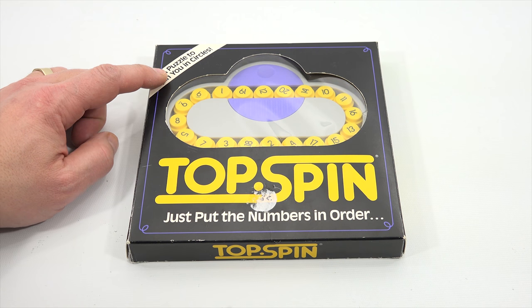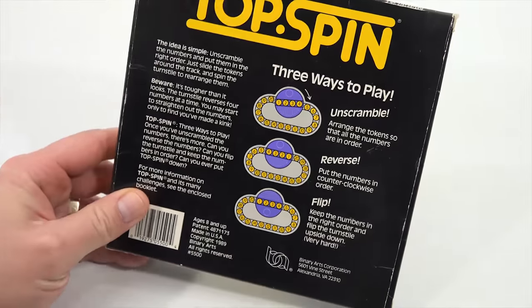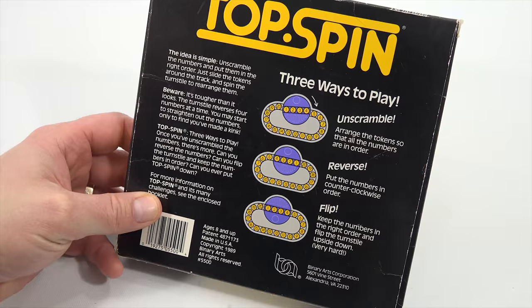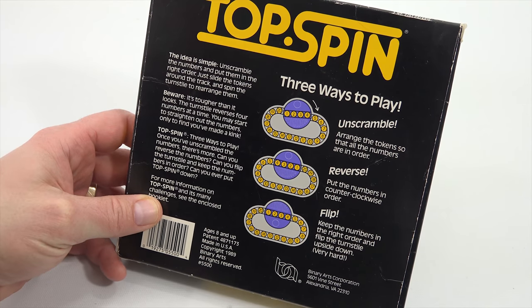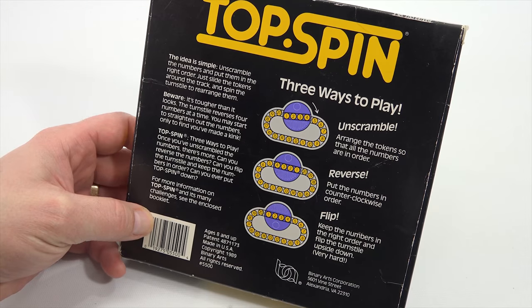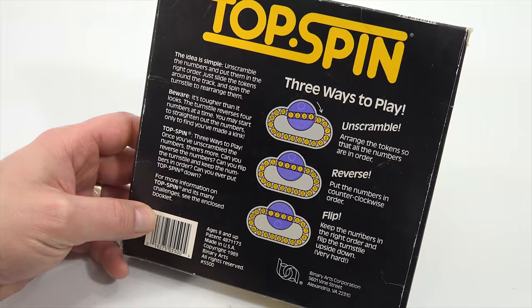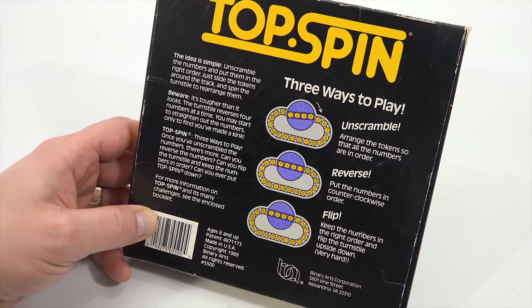A puzzle to spin you in circles. Alright, let's just see here. The idea is simple, oh they say. Unscramble the numbers and put them in the right order. Just slide the tokens around the track and spin the turnstile to rearrange them. Beware, it's tougher than it looks. The turnstile reverses four numbers at a time. You may start to straighten out the numbers only to find you've made a kink.